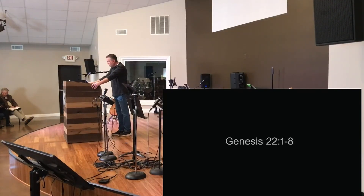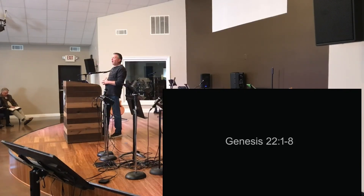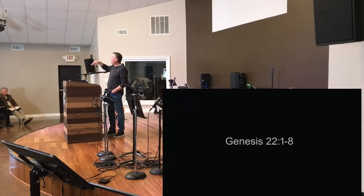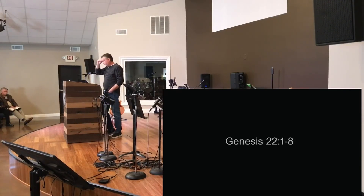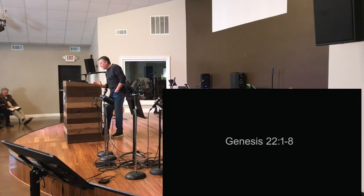He cut the etz, the wood, the tree - same thing - for the burnt offering, and arose and went to the place of which God had told him, which once again is Moriah. On the third day - that should pop up all through - on the third day Abraham lifted up his eyes and saw the place from afar. Then Abraham said to his young men, stay here with the donkey. I and the boy will go over there and worship and come again to you. And Abraham took the etz of the burnt offering and laid it on Isaac his son - on his back. So he carried the tree on his back.